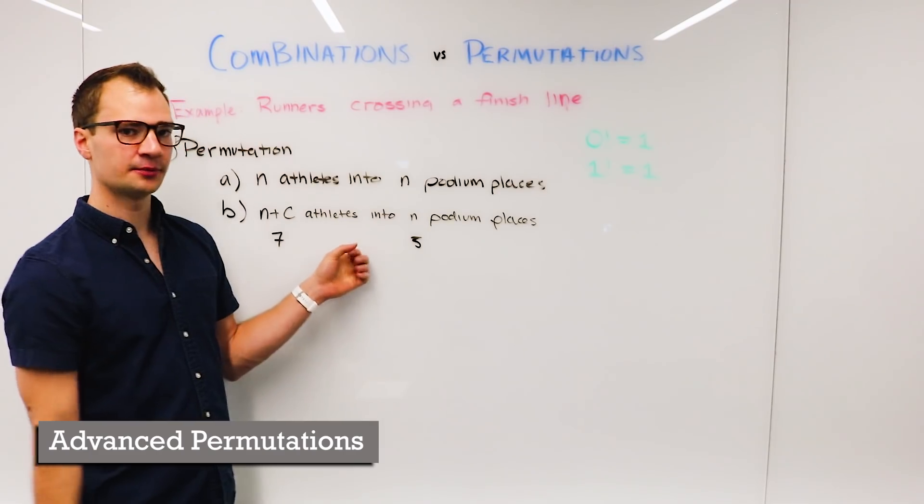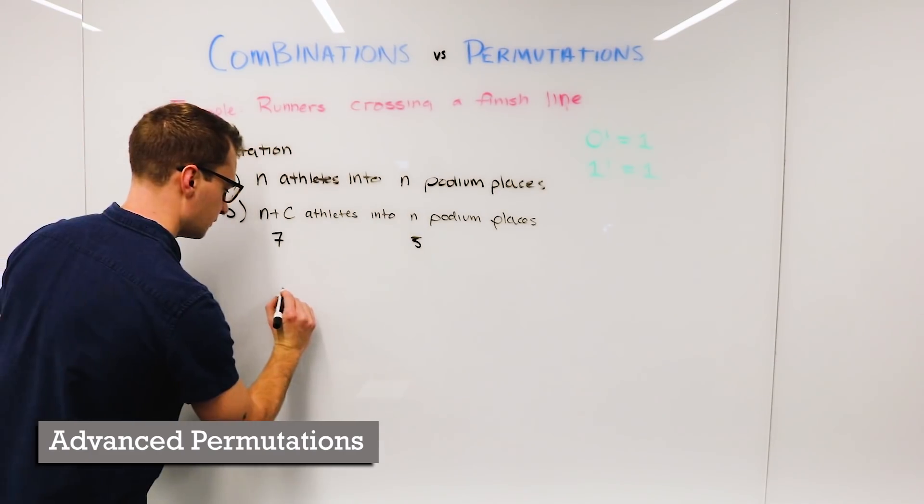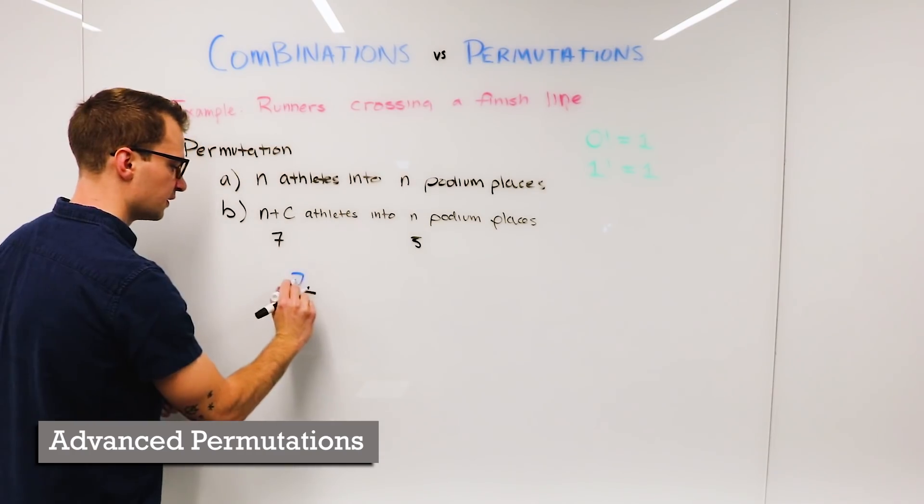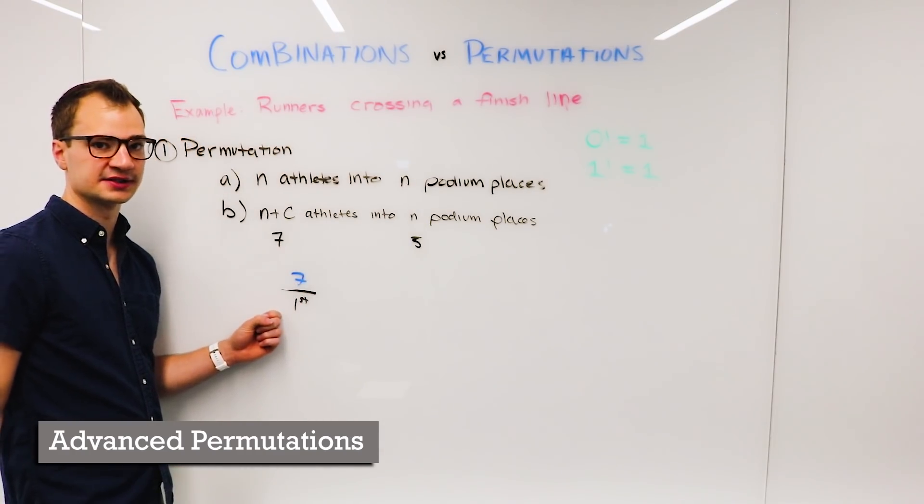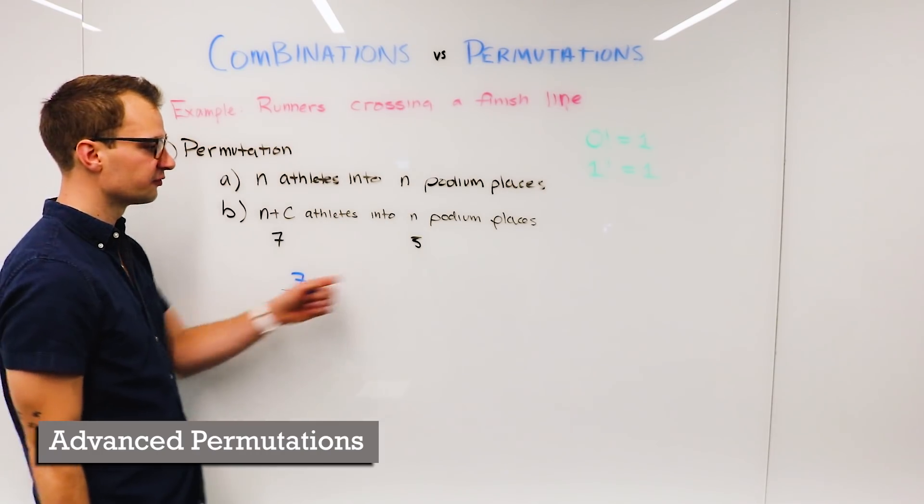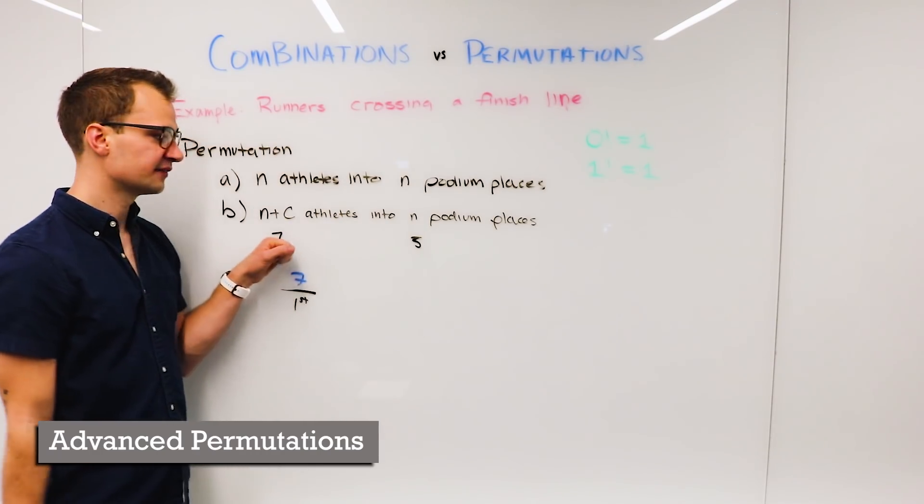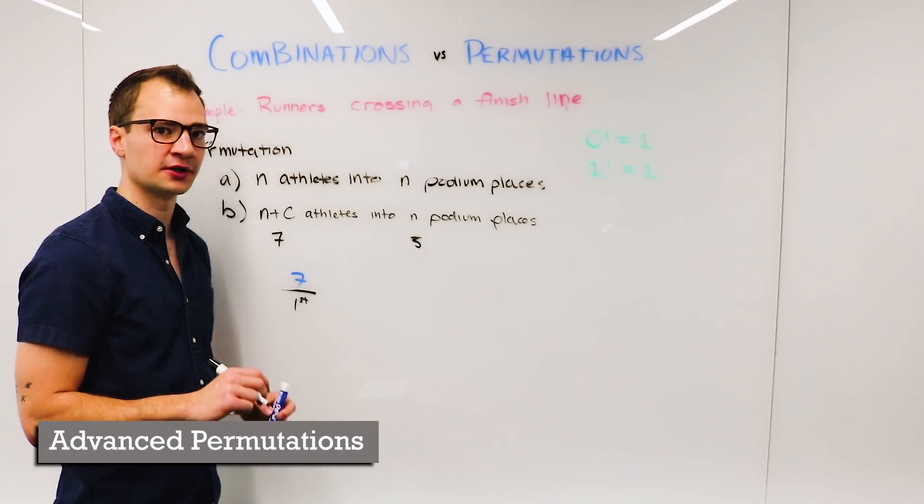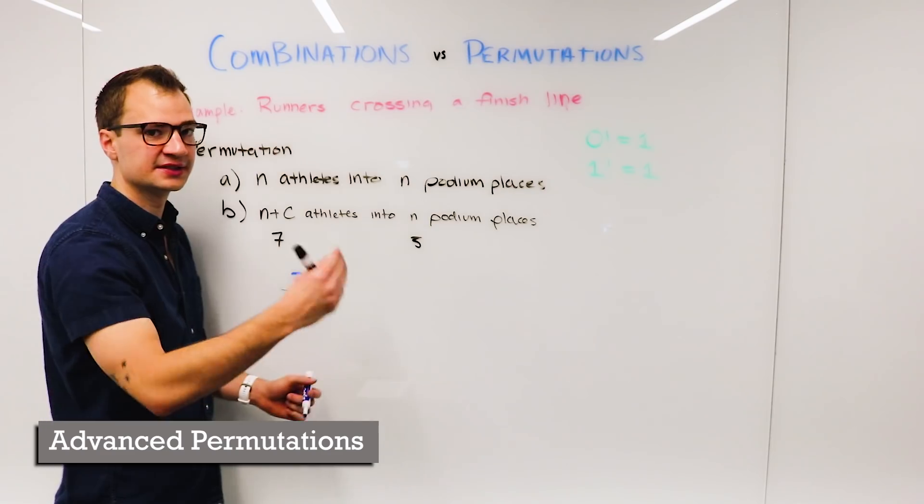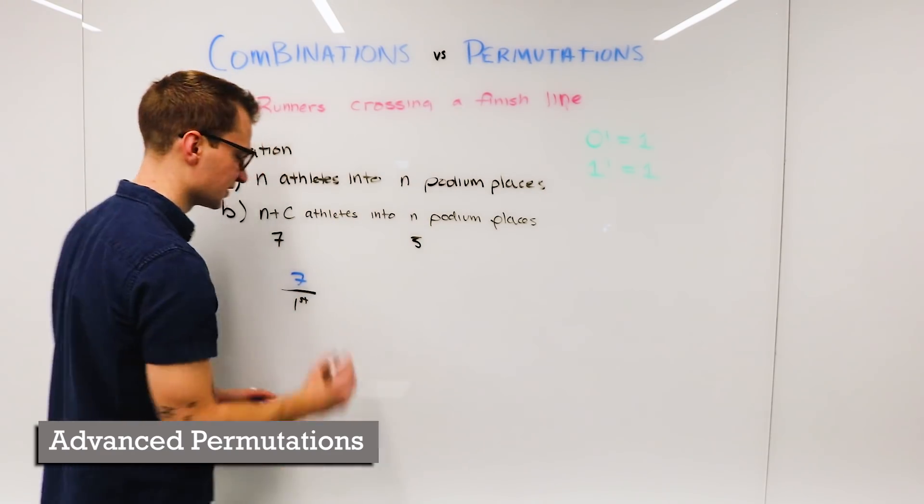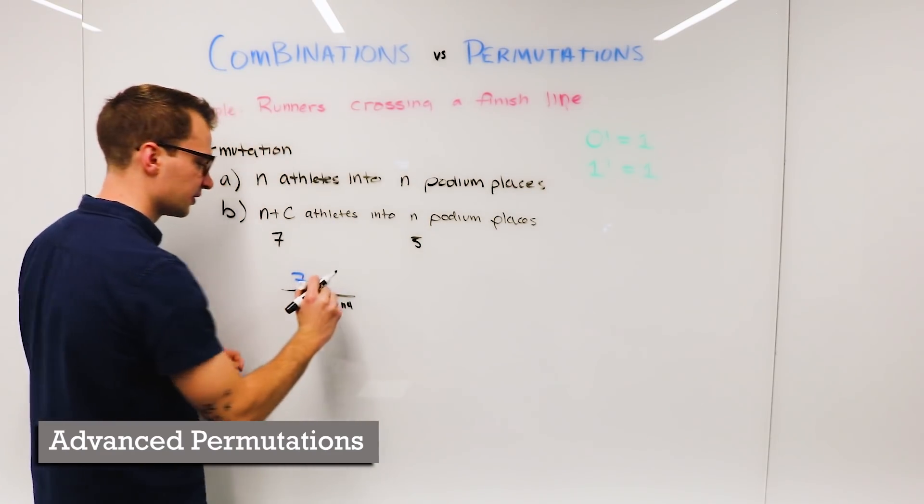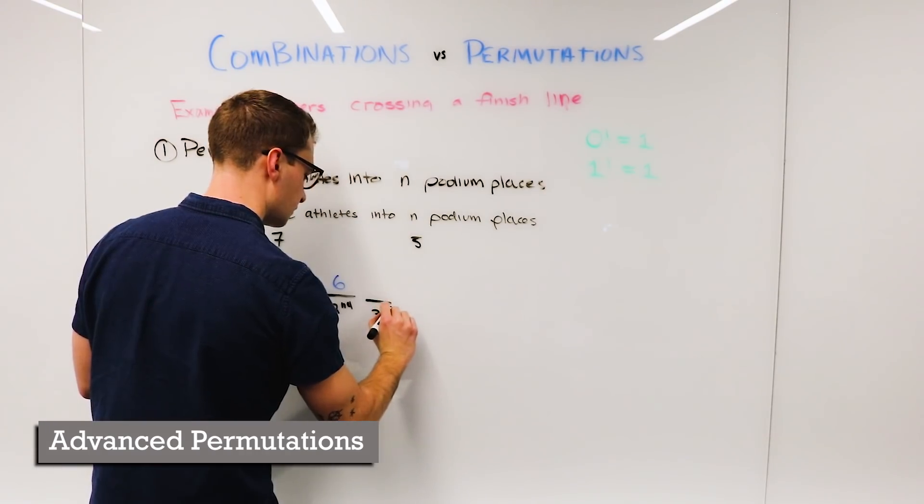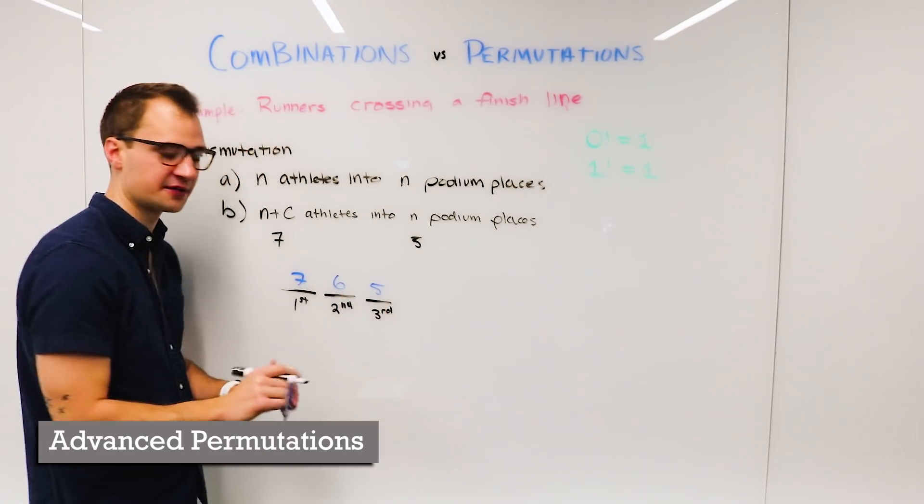So let's look at how many possible combinations of this there are. In first place there are seven different ways that it could happen. So if we were looking at seven athletes into one podium place, the answer would just be seven. Any one of those seven could win. But when we add podium places, that's where the multiplication comes in. So second place, this should look very familiar: six athletes. Third place we have five possible athletes.